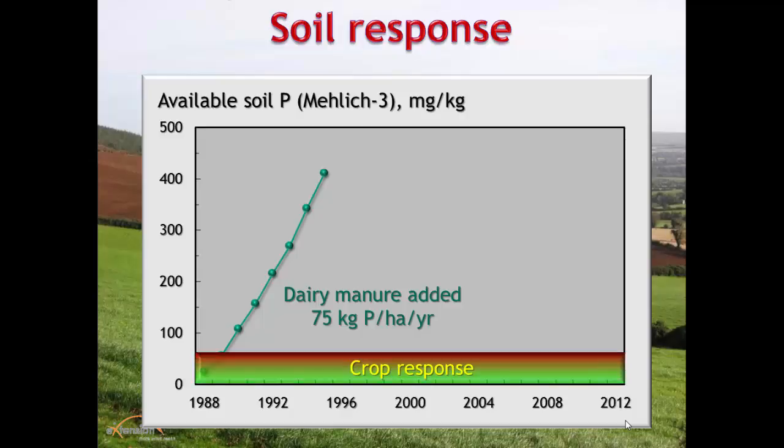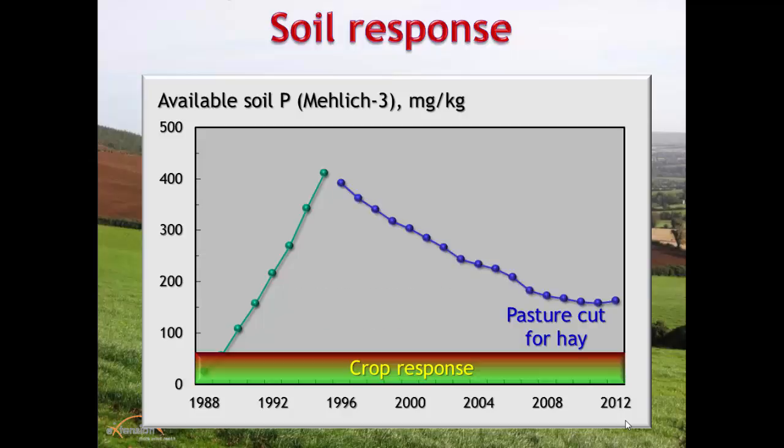Work done in Oklahoma looked at adding manure to soil. Over just a few years, phosphorus builds up to around 400 mg/kg — well above crop response — even when applied at nitrogen application rates. If you remove phosphorus by cutting hay, levels drop, but after 15 years it can still be above crop response. Where grazing occurs without offtake, there is a slight decrease, partly from phosphorus becoming fixed in more unavailable forms over time, but this doesn't always show up in soil tests.